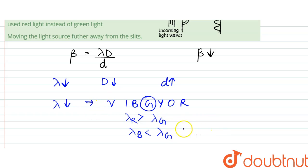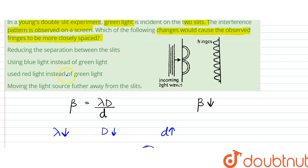So we can use blue light instead—blue, indigo, or violet we can use. Reducing the separation between the slits, we have to increase it, so this won't help. Using blue light instead of green light, this will help. Moving the light source further away from the slits, this will not help.